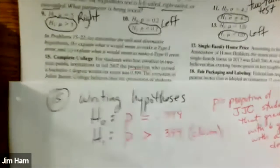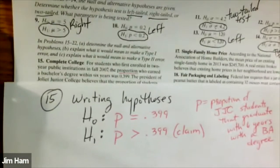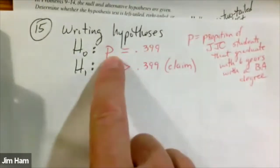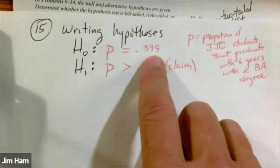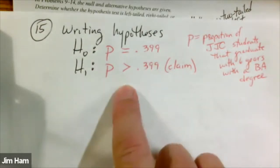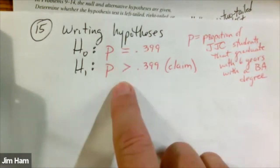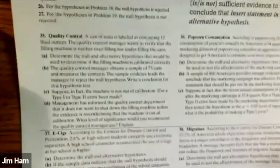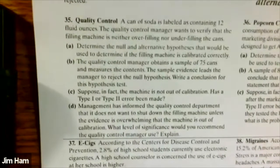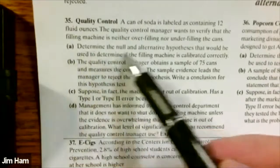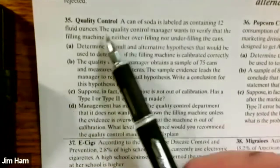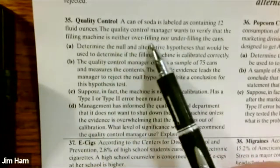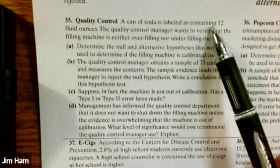I'll always ask you to define the variables. For this problem, p is the proportion of Joliet Junior College students that graduate within six years with a baccalaureate degree. The administrator at the college thinks it's going to be a little bit larger. So there's the claim that we're going to test — that's the first step, write the hypothesis.